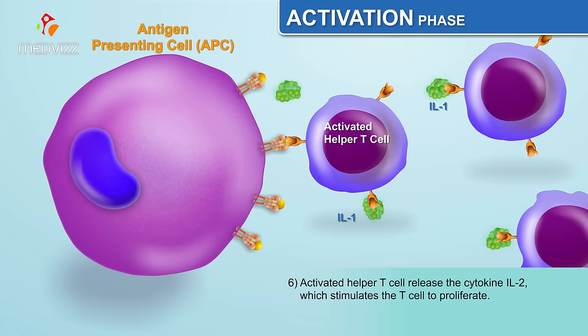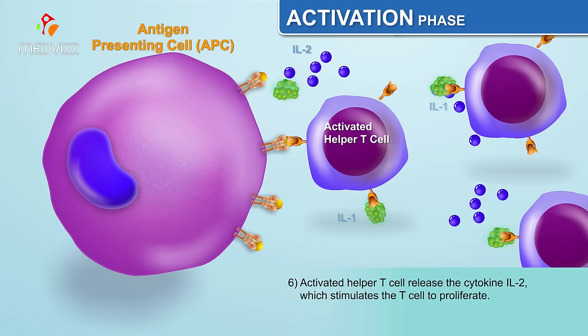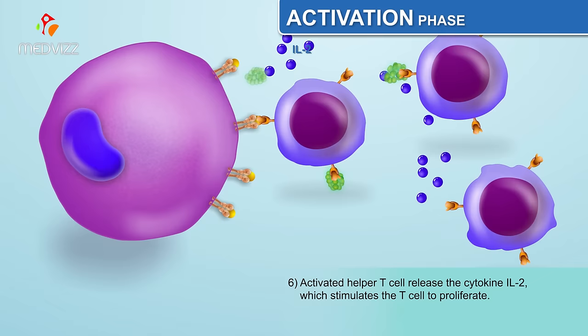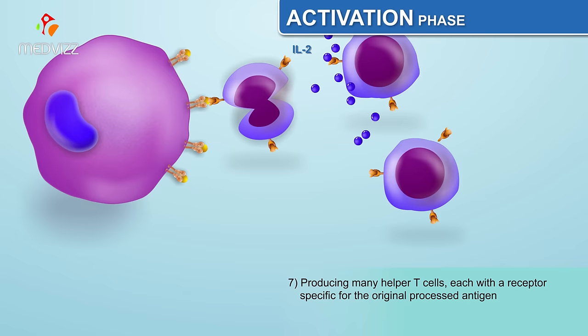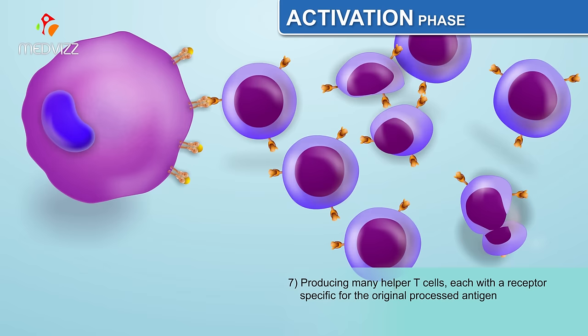The activated helper T cell releases the cytokine IL-2, which stimulates the T cell to proliferate, thus producing many helper T cells each with a receptor specific for the original processed antigen.